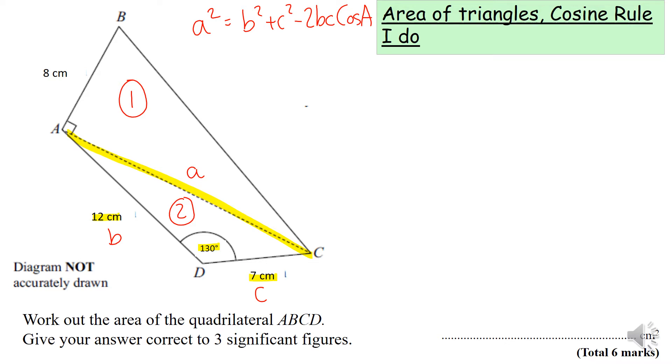Now I'm going to substitute these values into my equation. A squared equals 12 squared plus 7 squared minus 2 times 12 times 7 times cos 130 degrees. Ensure your calculator is in degrees mode. If not, press shift 9, the number 3, and equals and equals again to reset it.